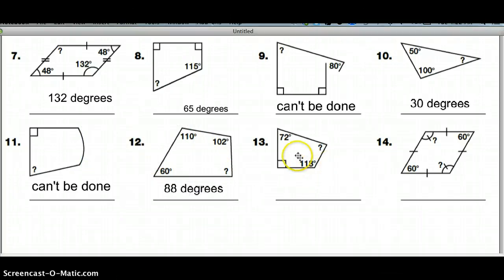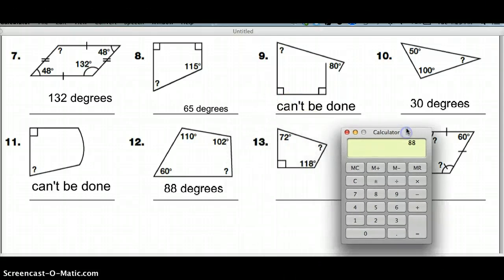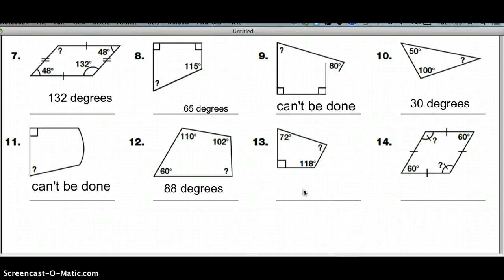Get number 13. Again, it's quadrilateral, so it must be 360 degrees. So I'm going to do the calculator again. Clear it off. Start over. So I have 360 minus, looks like, 118, minus 90, minus 72. That will give me my answer of 80 degrees.